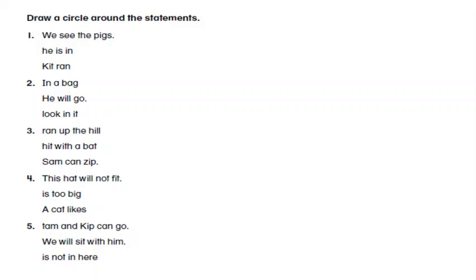This is the grammar part. Draw a circle around the statements. Number one: We see the pigs, he is in, Kit ran. Now if you remember, we said that a statement should begin with a capital letter and it should end with a period or a punctuation mark. Plus the words should make sense. The words should be in the right order. So we see the pigs. Now I understand, we see the pigs. But he is in, I do not understand anything. Kit ran, it also doesn't make sense and it doesn't have a punctuation at the end. So the statement here, the right statement is, we see the pigs.